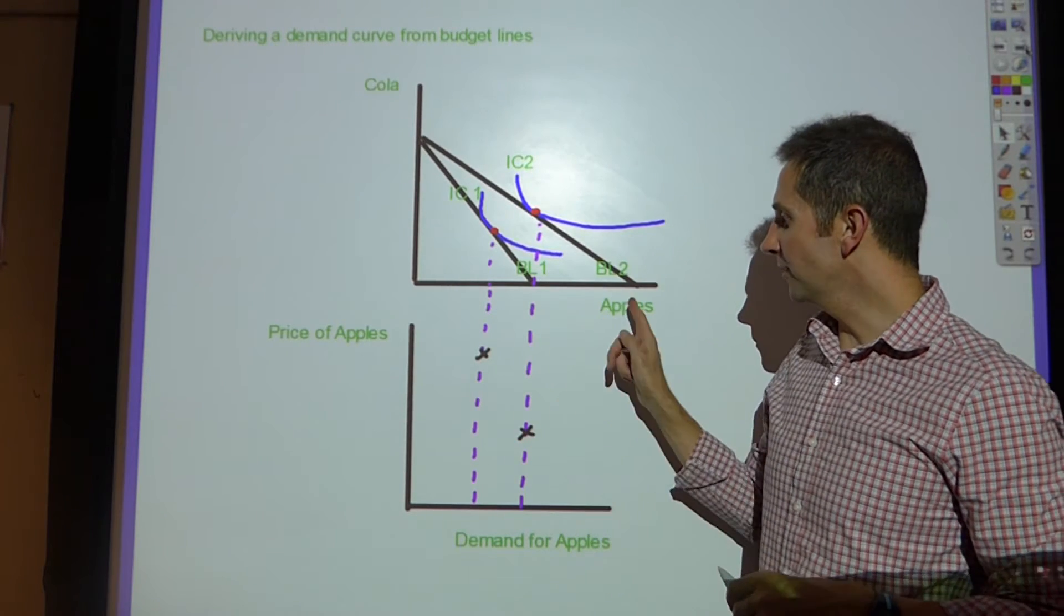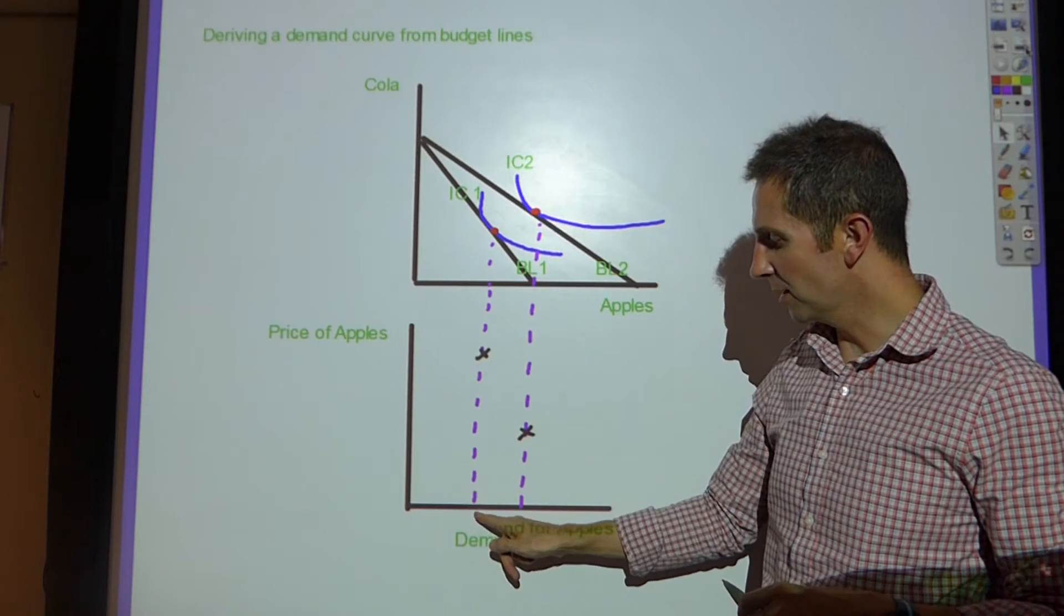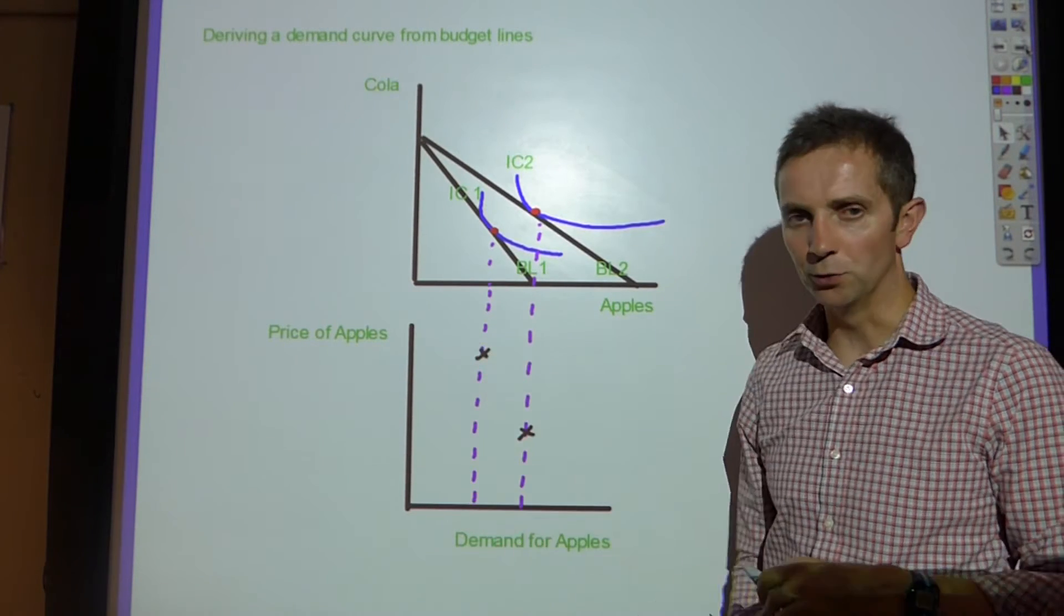And obviously given that that's also a quantity of apples, we can take this dashed line down and so that would be the quantity of apples. So you'd have P and Q.